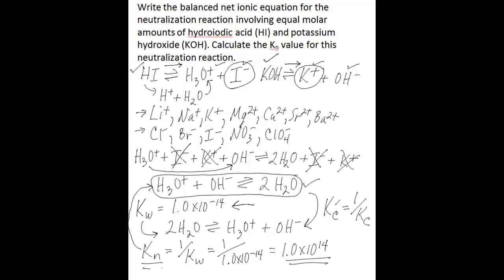So this is our Kn value for a neutralization reaction involving hydroiodic acid and potassium hydroxide. You can see that this is a very large Kn value. And that tells you that this neutralization reaction in particular proceeds very far to the right. So very much you're left with a lot of products and not a lot of reactants.